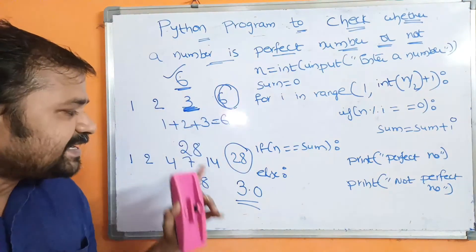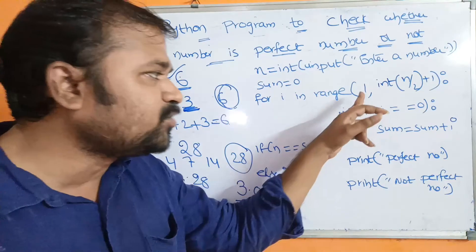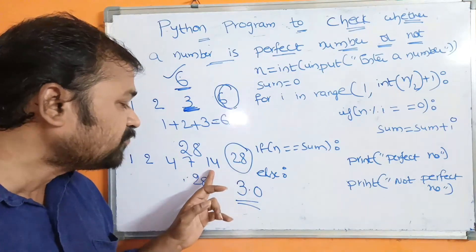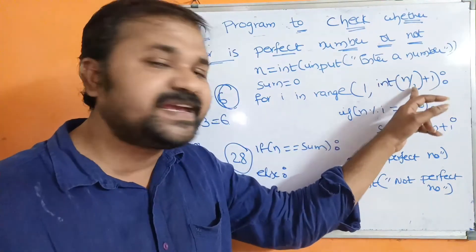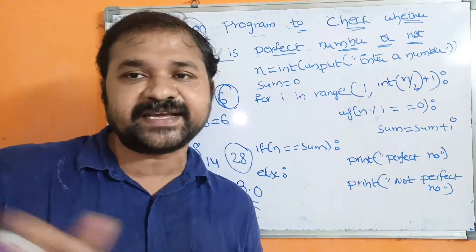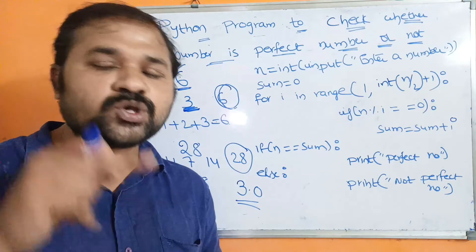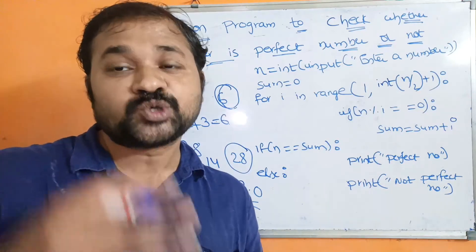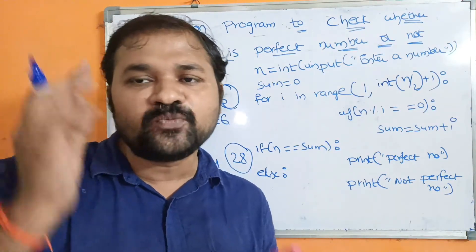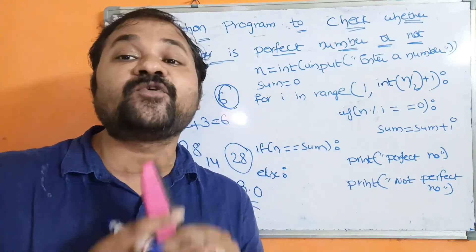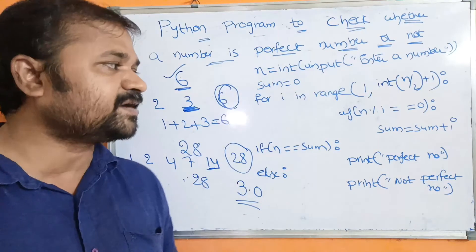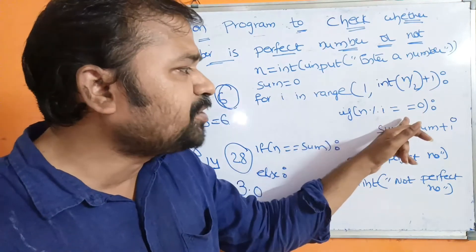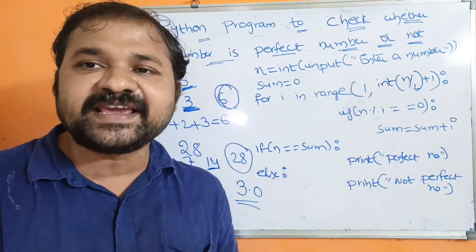For n=28, the for loop starts from 1 up to 14. Since 28/2 gives 14.0, int(14.0) is 14, and 14+1=15 is the stop value. The for loop repeats up to 15-1=14. So the loop iterates from 1 to 14 inclusive.